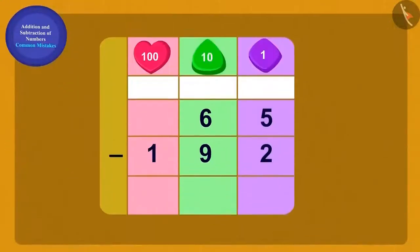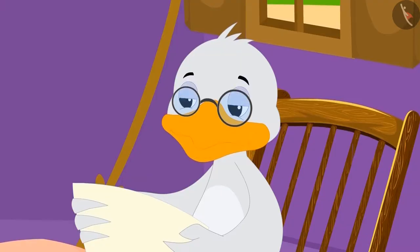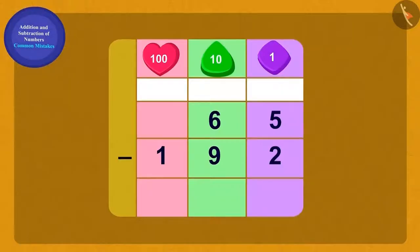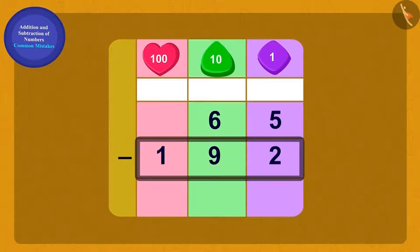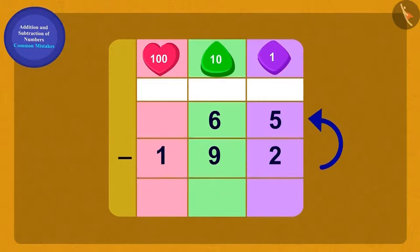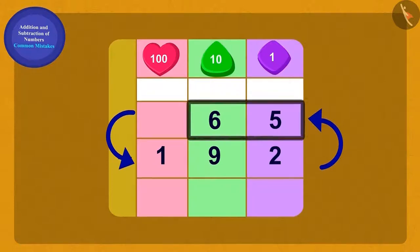Golu had written the question like this. Golu dear, you have written this question wrong. While subtracting numbers we always have to subtract the smaller number from the larger number. To show this we write the larger number above the smaller number.